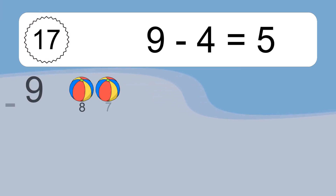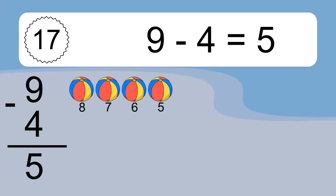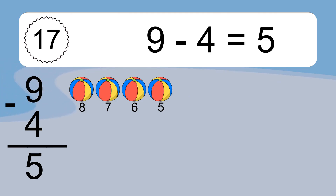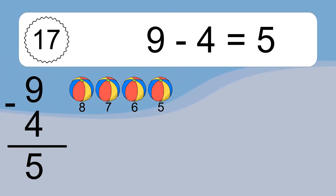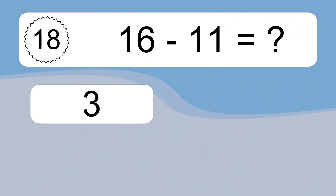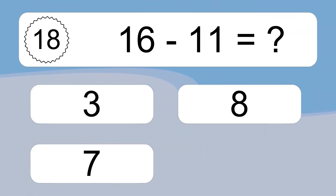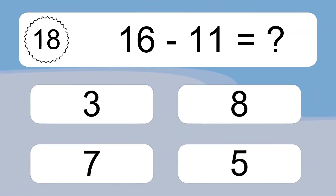9 minus 4 equals 5. Let's count it: 8, 7, 6, 5. 16 minus 11 equals what?